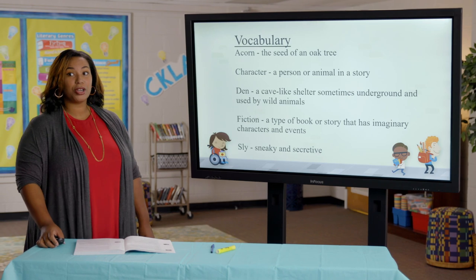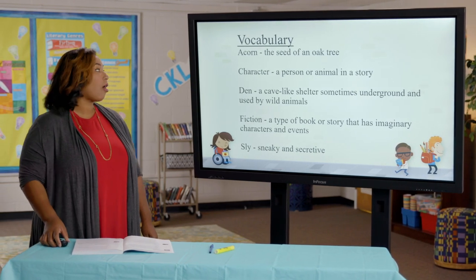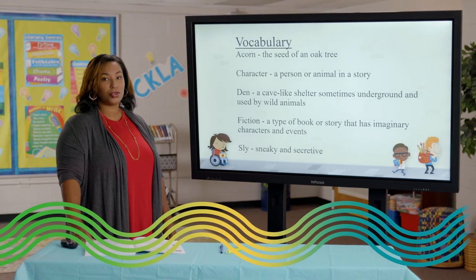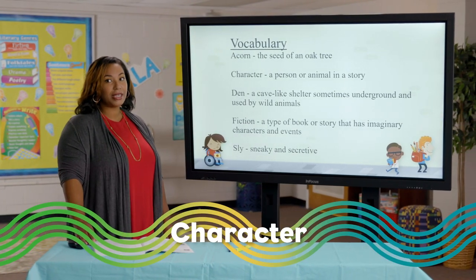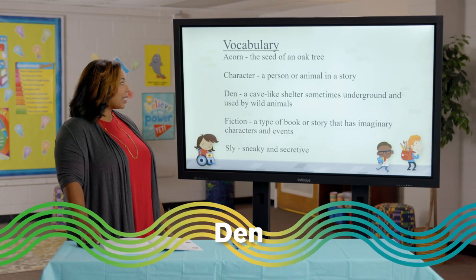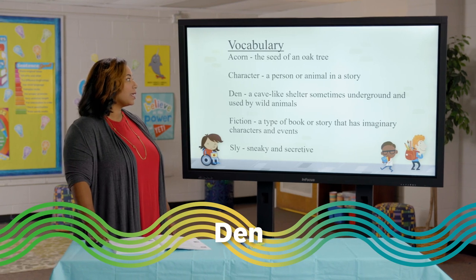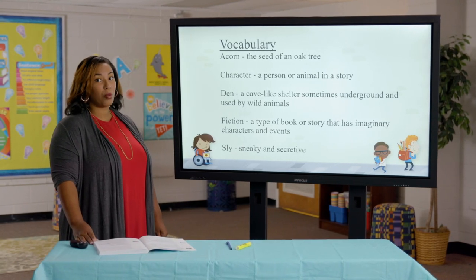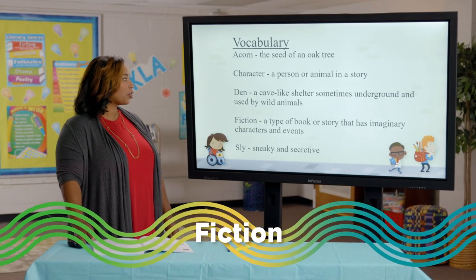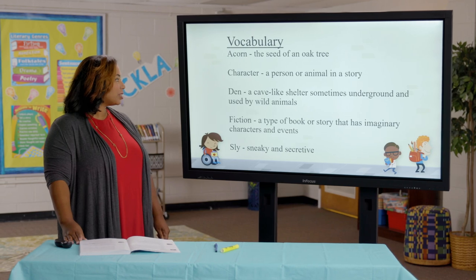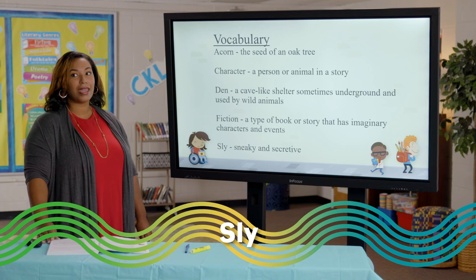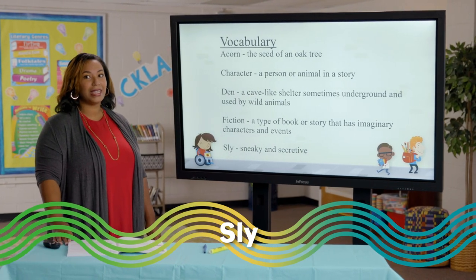Some key vocabulary words that you're going to hear in today's story are: acorn — an acorn is a seed of an oak tree. Character — a character is a person or an animal in the story. Den — a den is a cave-like shelter, sometimes underground and used by wild animals. Fiction — fiction is a type of book or story that has imaginary characters and events. And last but not least, sly — if something is sly, it is secretive and sneaky.